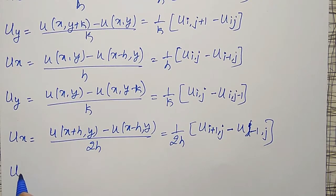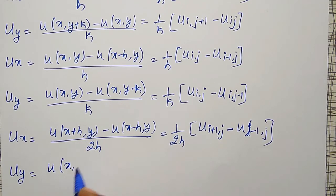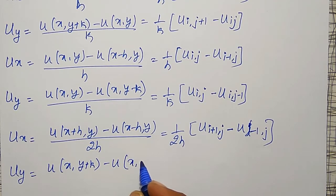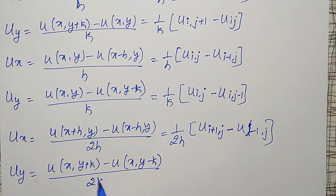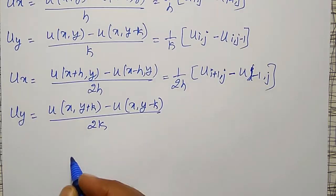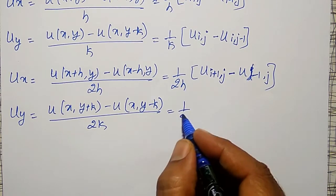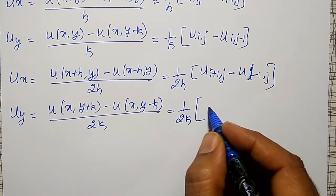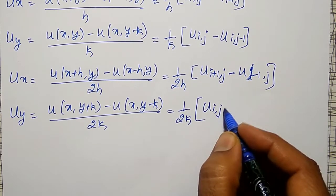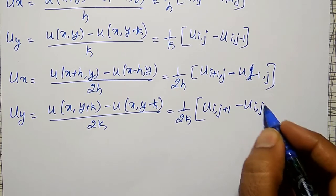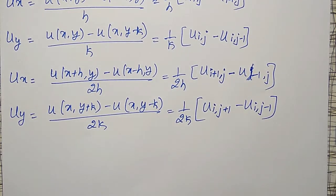Similarly, the central difference for u_y can be written as u of x comma y plus k minus u of x comma y minus k, whole divided by 2k. In short notation, that is 1/(2k) times u_{i, j+1} minus u_{i, j-1}. Central difference.